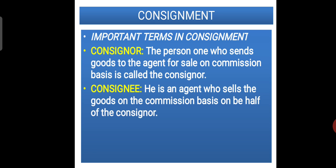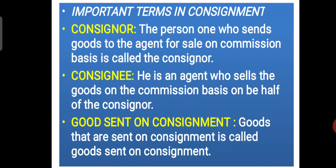The second term is Consignee. He is an agent who sells the goods on commission basis on behalf of the Consignor. As we learnt in the previous video, the relationship between Consignor and Consignee is that of a principal and agent. The Consignee sells the goods on behalf of the Consignor and for that he gets some commission. Consignee is the person to whom the consignment goods are sent.